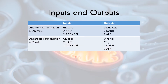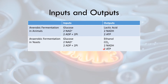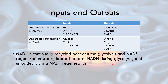You do need to know your inputs and outputs. For anaerobic fermentation in animals, the inputs are glucose, 2 NAD⁺, and 2 ADP plus 2 Pᵢ, which are converted to the products lactic acid, 2 NADH, and 2 ATP. For anaerobic fermentation in yeast, the inputs are glucose, 2 NAD⁺, and 2 ADP plus 2 Pᵢ; the outputs are ethanol and CO₂ instead of lactic acid, but 2 NADH and 2 ATP remain the same. Remember, NAD⁺ is continually recycled — that loaded form of NADH must be unloaded back to NAD⁺. Really important.